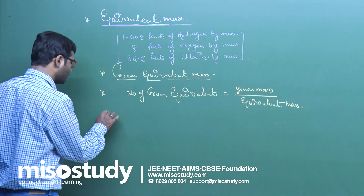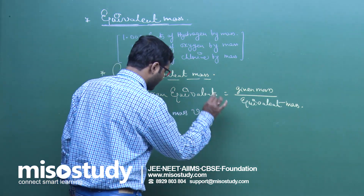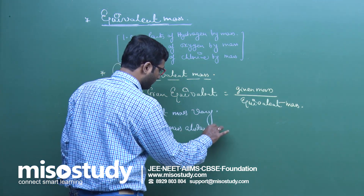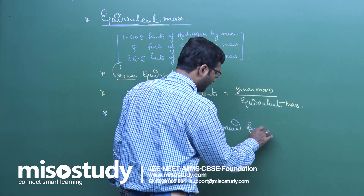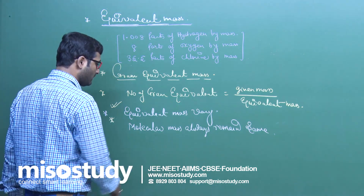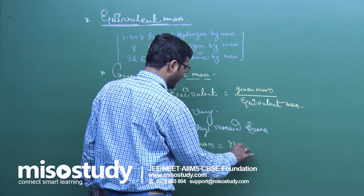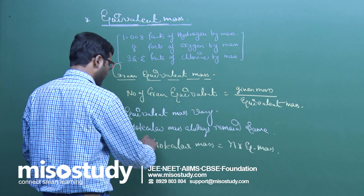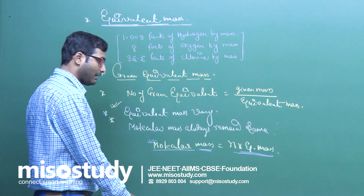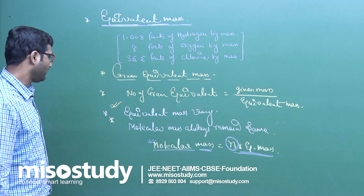One important thing: equivalent mass of any substance is not fixed — it varies as per the situation. But molecular mass always remains the same for a particular compound or molecule. The relation between equivalent mass and molecular mass is: molecular mass = N × equivalent mass. Here N is an integer with values 1, 2, 3, 4, and so on to infinity, depending upon the situation.